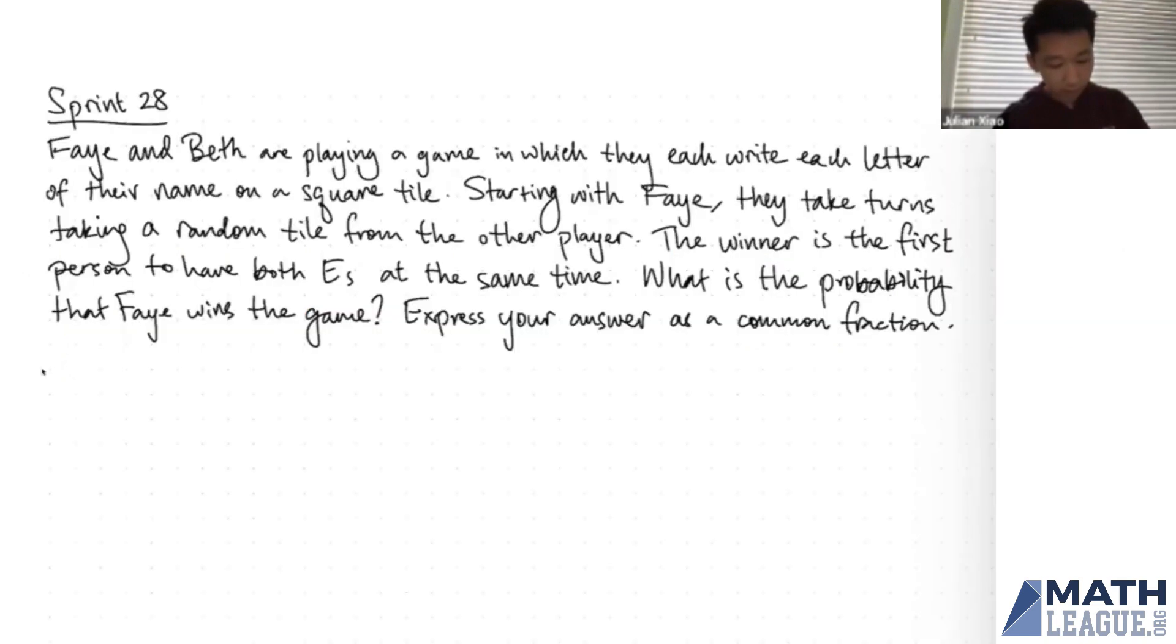So I'm first going to draw out what I understand from the problem. We have these four tiles that Faye has at the beginning, and then Beth will have these four tiles. Now I want to do a little bit of work to simplify this problem, to remove any of the unnecessary details so that it's clearer how I should go with the solution.